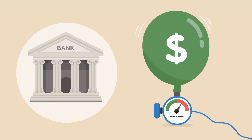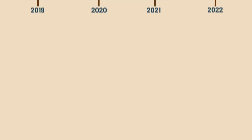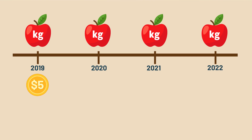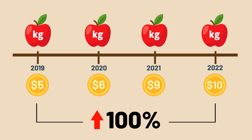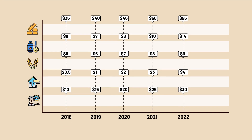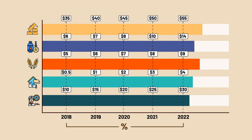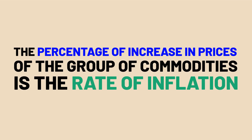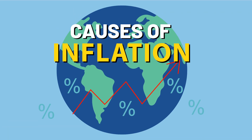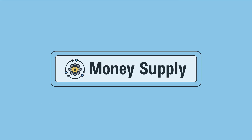Most central banks try to limit inflation to keep their economies functioning efficiently, as there are both advantages and disadvantages to inflation. A simple example: suppose a kilo of apples cost five dollars in 2019 and ten dollars in 2022 — that's a 100% increase. In the same way, many commodities and services whose prices have risen are grouped together, and the percentage increase calculated using a base year gives the rate of inflation.